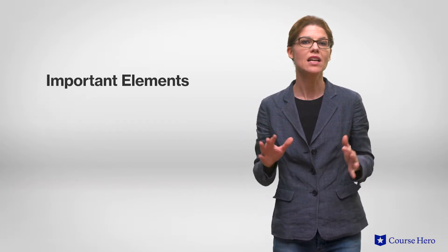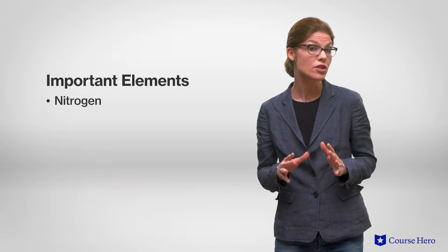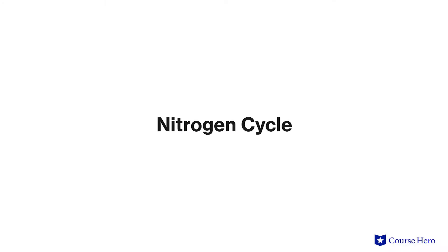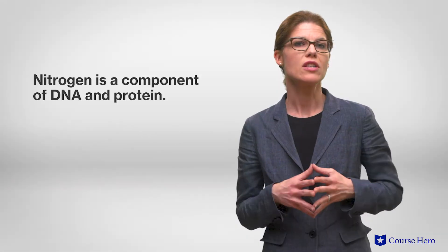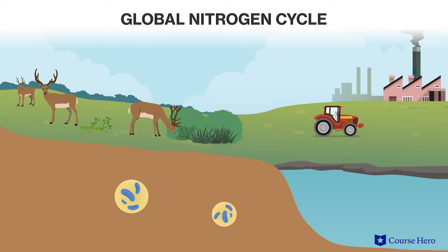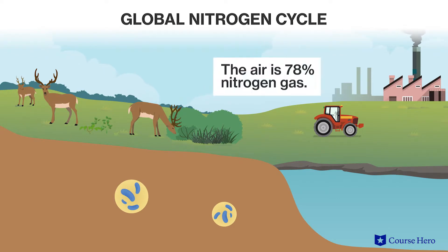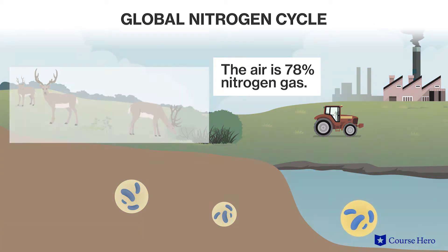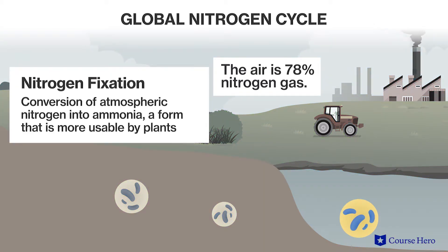Three important elements that cycle through ecosystems are nitrogen, phosphorus and carbon. Nitrogen is a component of DNA and of proteins and thus is an essential component of all organisms. Despite making up 78% of the Earth's atmosphere, most organisms are unable to use nitrogen gas directly. Most of the nitrogen available to organisms in an ecosystem comes from nitrogen fixation carried out by certain soil bacteria.